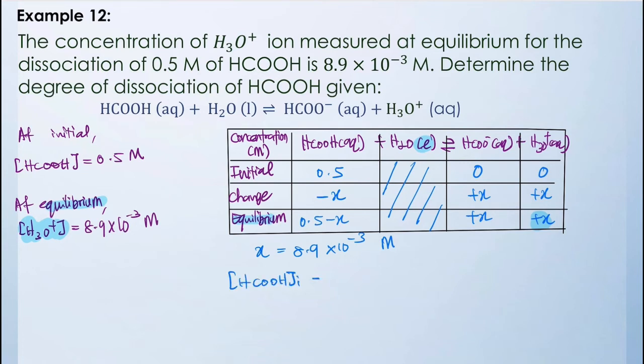The initial concentration of HCOOH is 0.5 M, and the change in concentration for HCOOH equals 8.9 × 10⁻³ M.